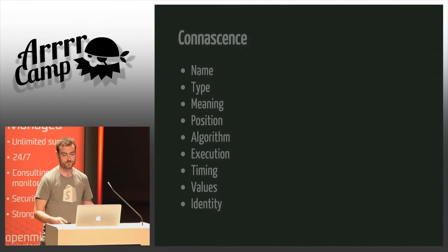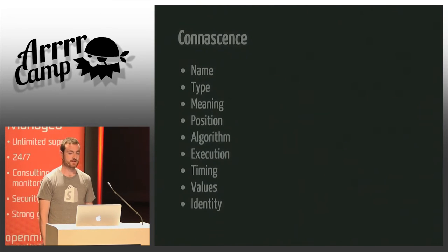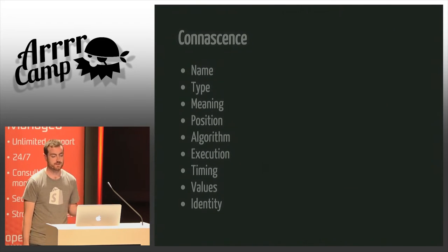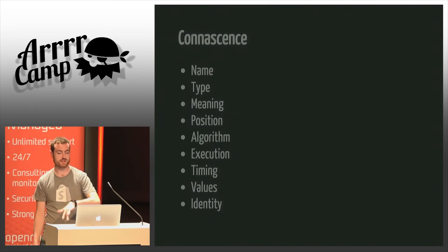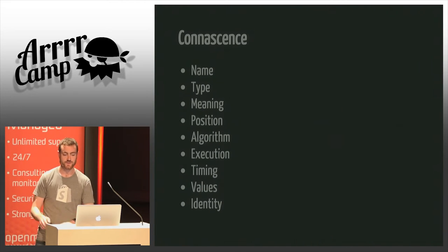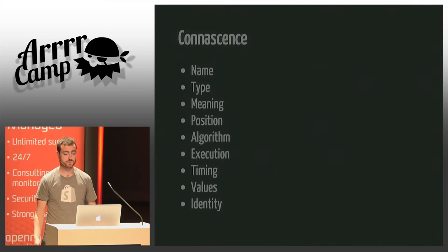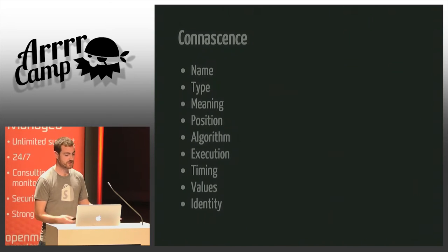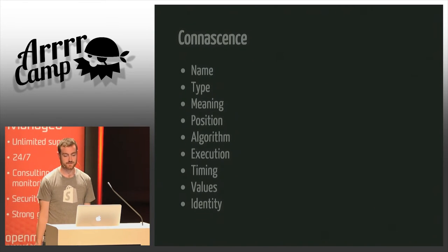This can be called connascence — it's a fancy name for coupling, basically. It's for object-oriented design, and what it means is that if two things are connascent, if you change one it will require you to change the other, or at least you'll have to check the call sites. In our case, if we change a method definition with positional args, we're probably going to have to change the method calls in other files.